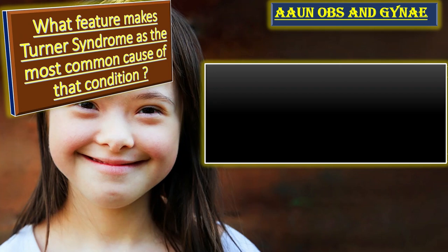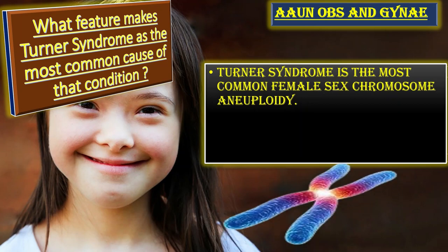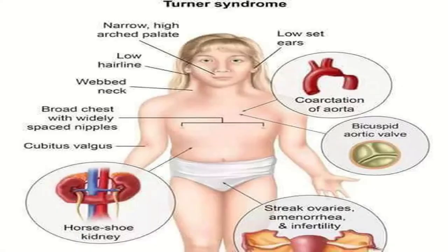Turner syndrome is the most common female sex chromosome aneuploidy. Secondly, Turner syndrome is the most common cause of primary amenorrhea. If you want to study primary amenorrhea causes, go to the link in the button in the top right corner of this video. The second most common cause of primary amenorrhea is MRKH.